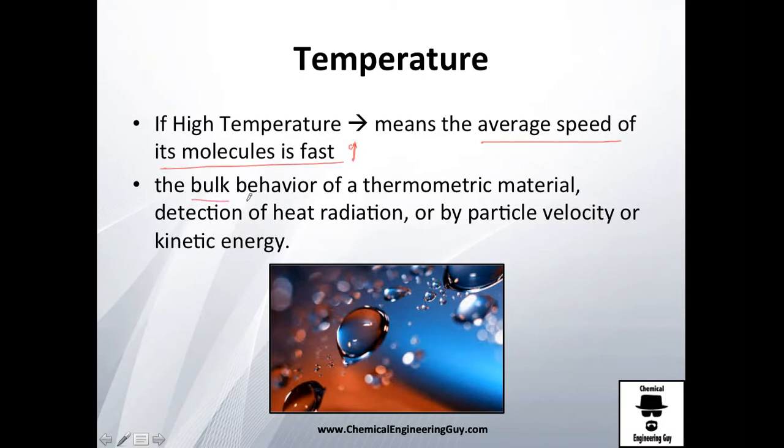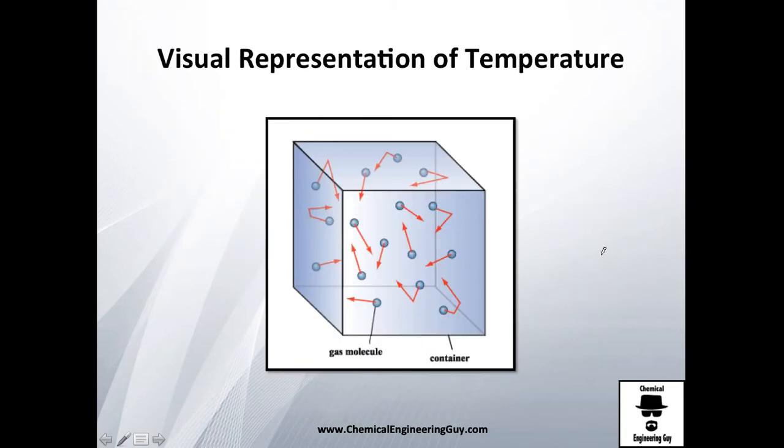So if high temperature means the average speed of molecules is fast, hopefully you get that right now. When I mean bulk behavior, that's why we use average, because you cannot measure each molecule of them. That's why we use temperature—it makes a lot of helpful stuff. It might be done by the detection of heat radiation or by particle velocity or kinetic energy. For example, particle velocity: if the water hits the thermometer, the thermometer gets warm and the temperature goes up.